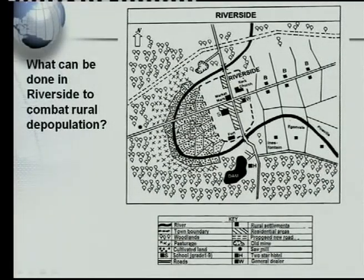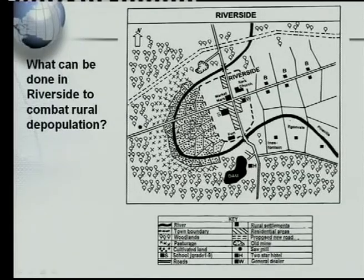I've brought back the slide of Riverside again, and here we ask the question: what can be done in Riverside to combat rural depopulation? Here we've got a diagram. Remember, you can only use the information on the diagram. There are many things that can be done, but can they be done in Riverside — can we see that on the diagram? Many of you make this mistake in the exams: you write the correct factors on how to combat rural depopulation, and it's right, but you didn't answer the question. Now you lose important marks. You've got to look for the answers on the diagram and see if they are there before you write it down.